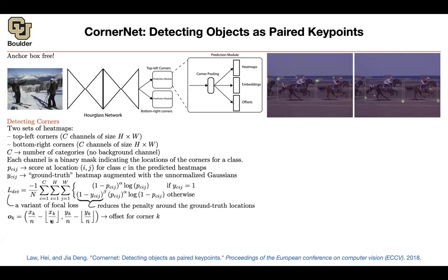The offset head does that adjustment for us. After downscaling, multiple pixels in the original image correspond to a single pixel in the feature map. A neural network head predicts these offsets, supervised with an L1 loss between the predicted and ground-truth offset values.